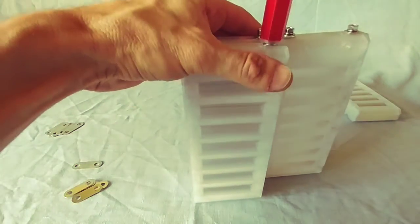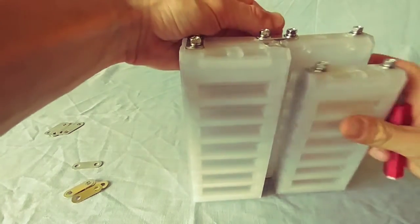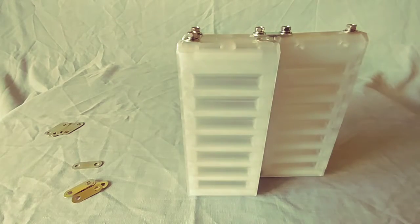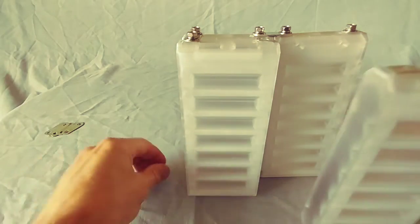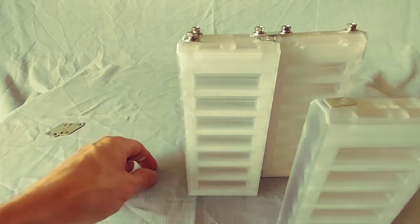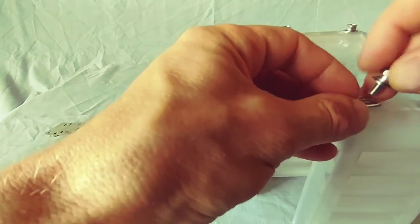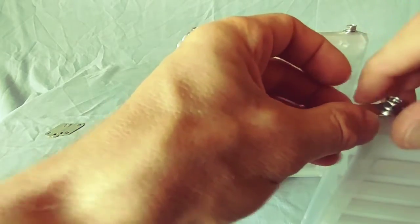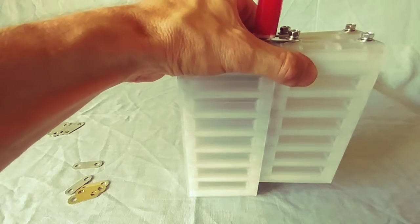If we are building a 4S battery, we would use one 21700 series bus bar and two 18650, just like that.